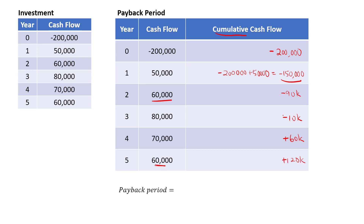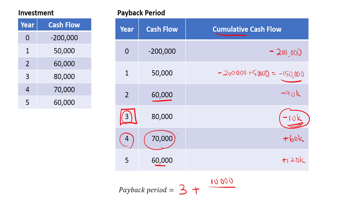To find the payback period, look for the period where the cumulative cash flow changes from negative to positive. That happens between year three and year four, so the payback period is in between these two periods. The company has $10,000 still to recover, which will come from the $70,000 in year four. Assuming cash flows are distributed evenly over the year, the payback period is three years plus $10,000 divided by $70,000, which equals 3.14 years. The company will need 3.14 years to recover the initial outlay of $200,000.